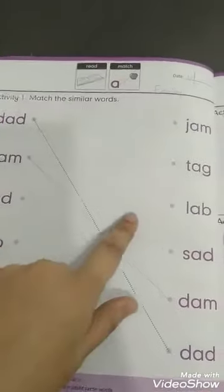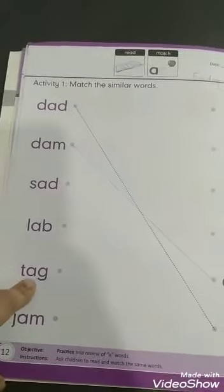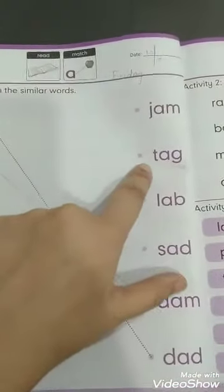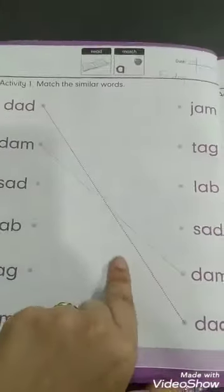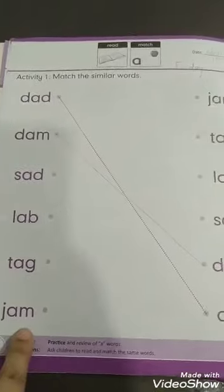Ab lab. Where is lab? Here is lab. Tag - where is tag? Here is tag. Hamne isi tarah se sari margin ke saath matching kareni hai. Jam - where is jam? Yes here is jam.